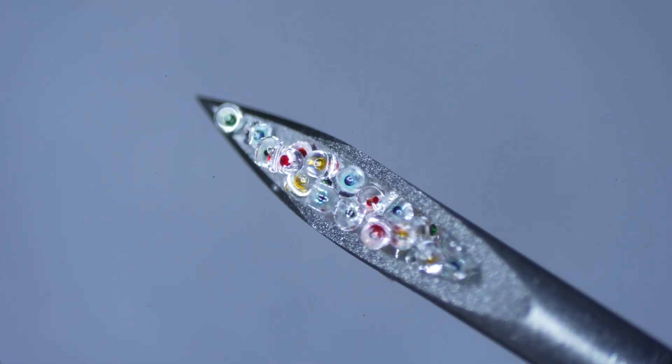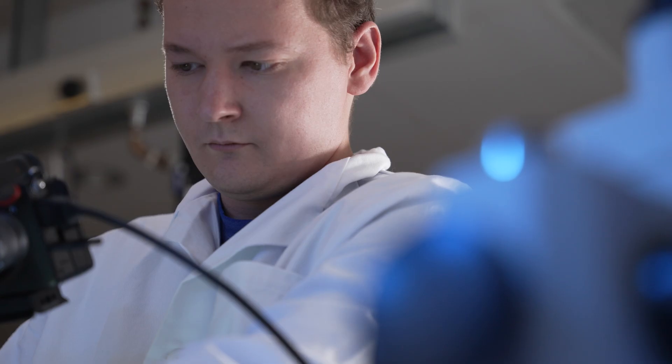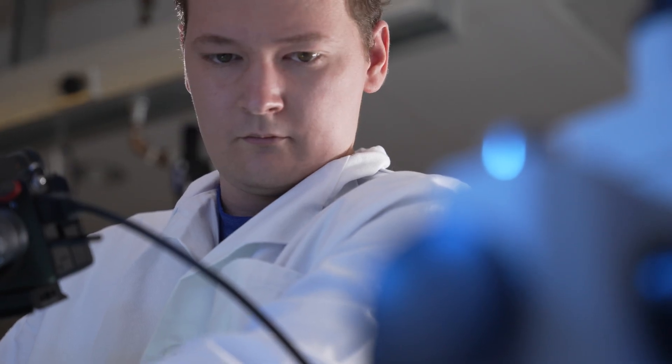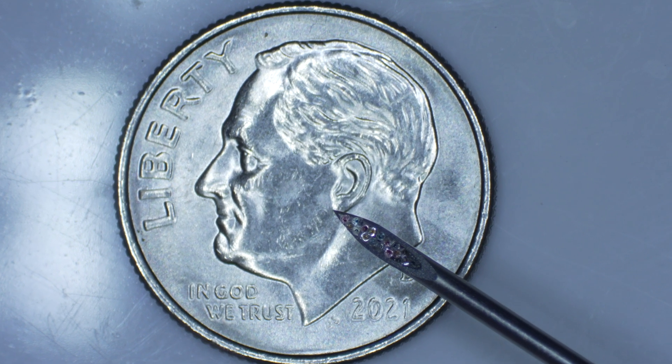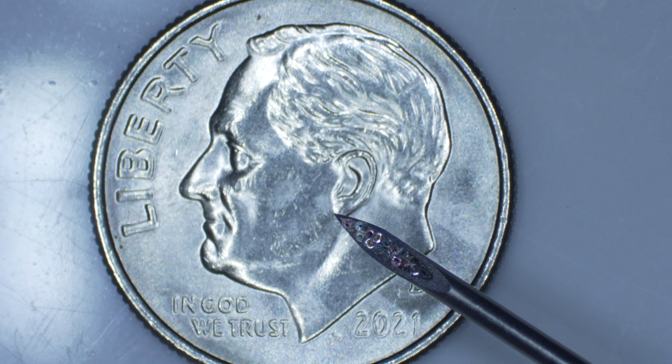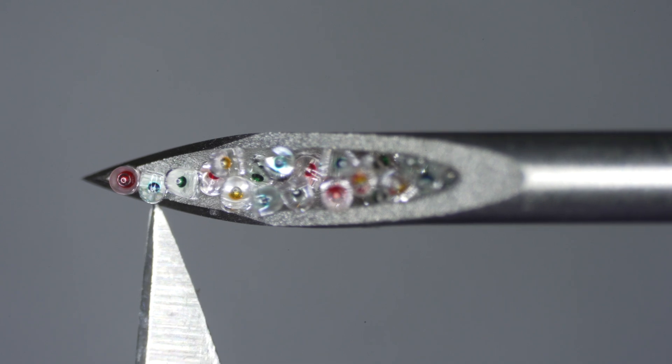With age-related macular degeneration, you have to get injections into your eye, which is very uncomfortable and something that I would have fear doing. So one application we want to do is inject different populations of these microparticles into the eye so that we can mimic clinical dosing schedules so that instead of getting an injection every month, we can space that out to an injection every three months or six months.